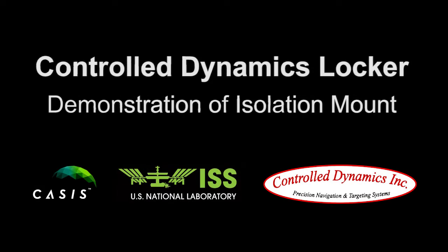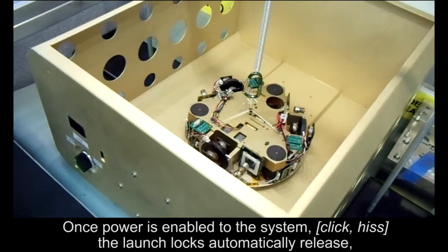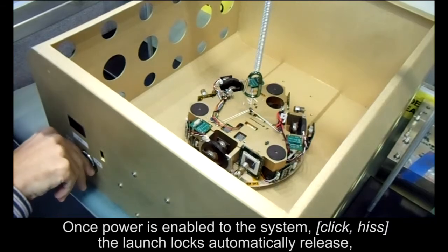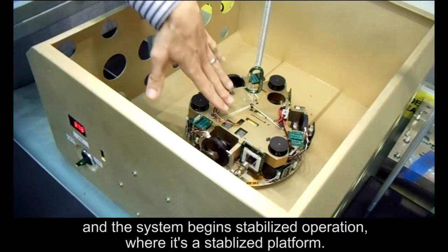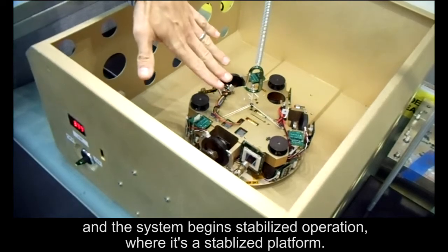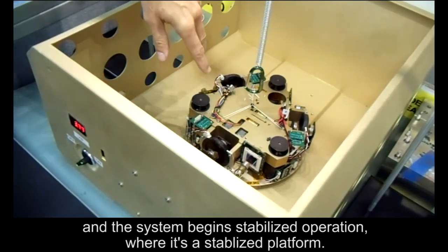When the astronaut installs the assembly and enables power, once power is enabled to the system, the launch locks automatically release and the system begins stabilized operation where it's a stabilized platform.